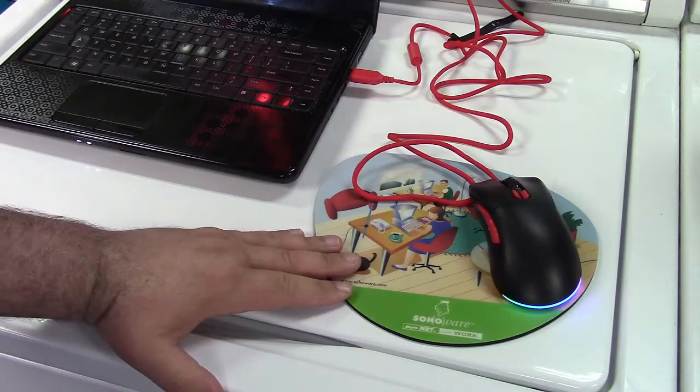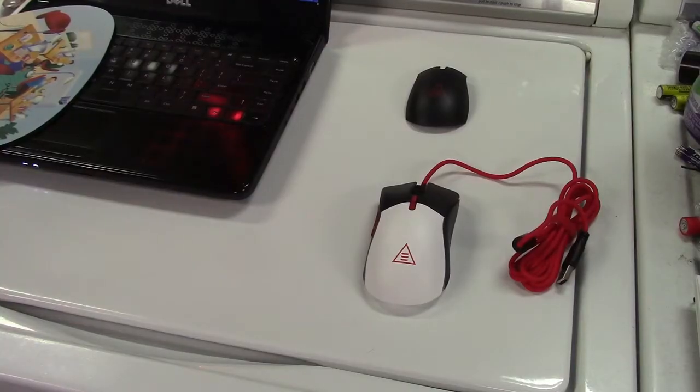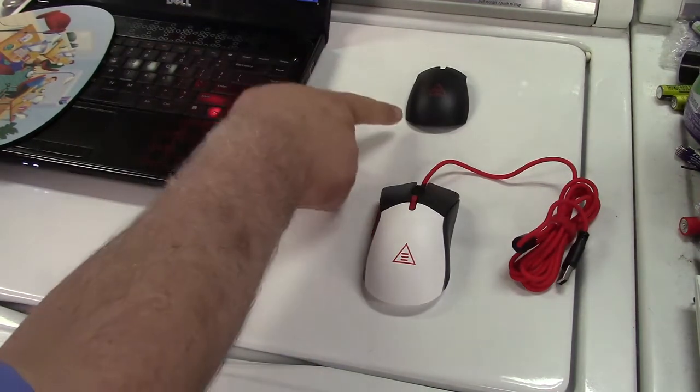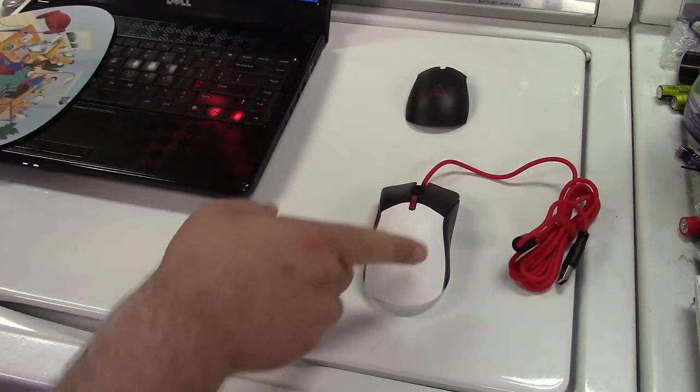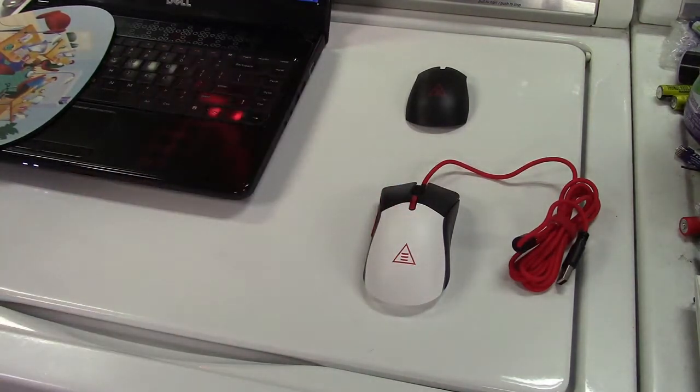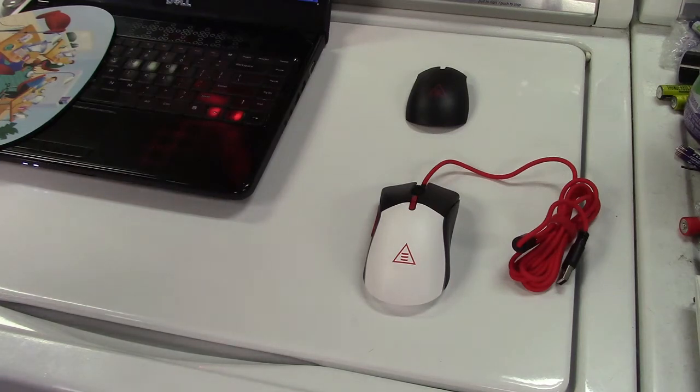This is the EM200 gaming mouse. It has 13 RGB modes. Adjustable DPI from 1,000 to 12,000 DPI. It has white or black interchangeable covers, as you see right there. They just pop right off. You could swap that on there. It has a tunable weight system from 91.8 grams to 108 grams. And there are seven programmable buttons. Let's test it out.